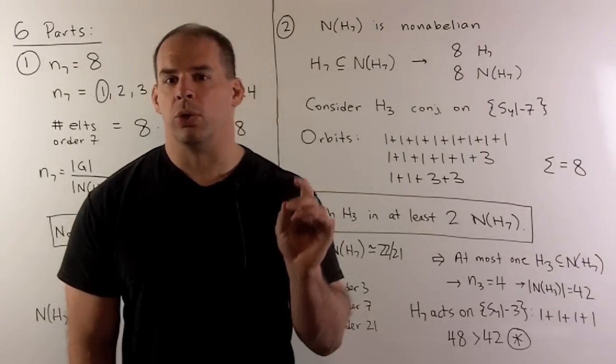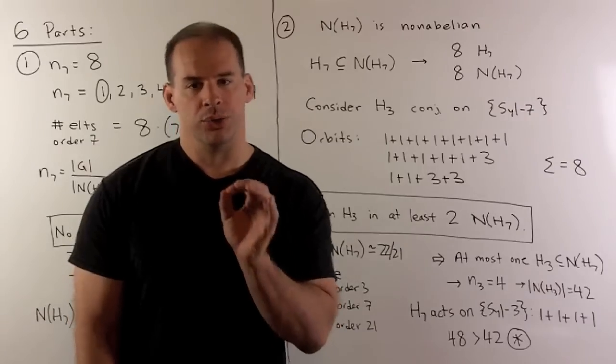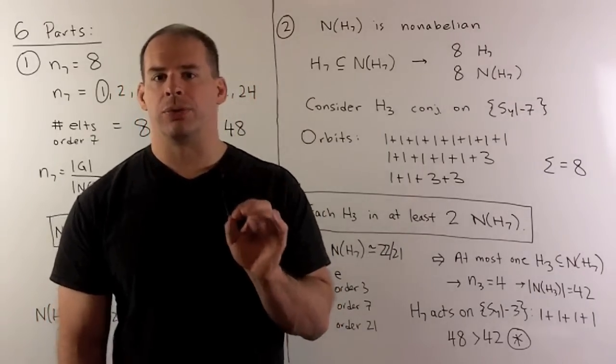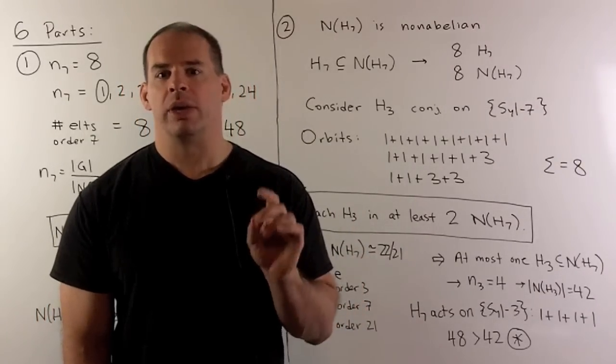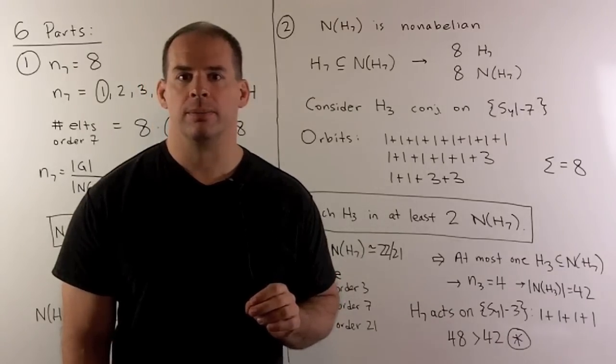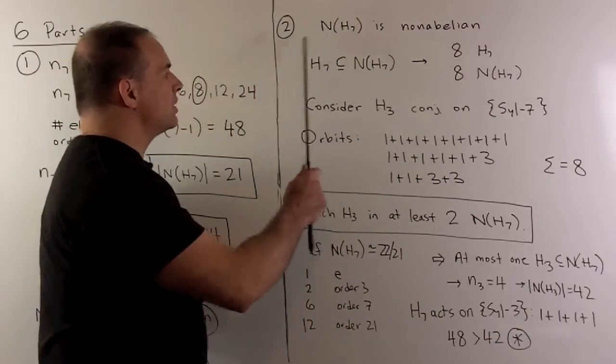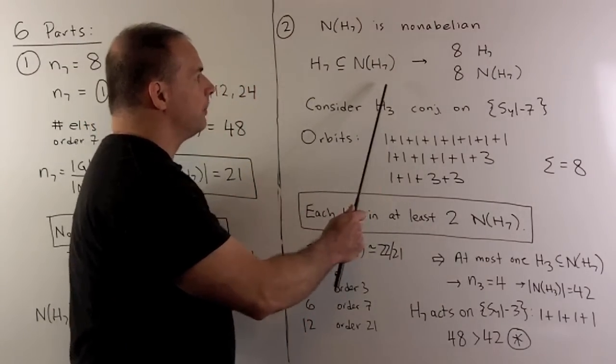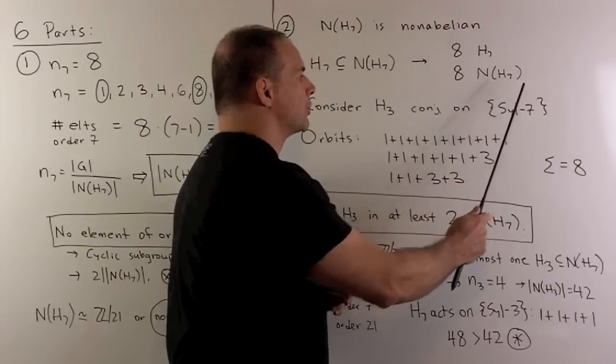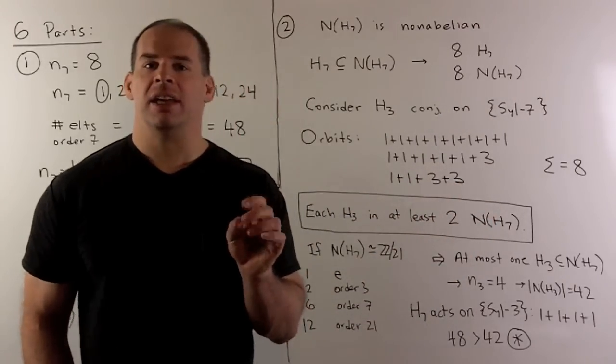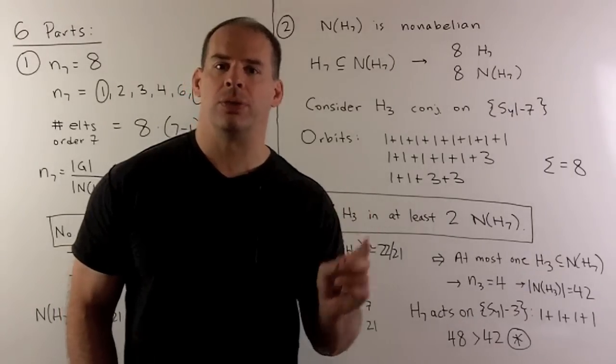Part 2, we show the normalizer of a Sylow 7 is non-abelian. We'll do this by showing that each Sylow 3 is contained in one of our normalizers. Then, we'll count the number of Sylow 3s. We have each Sylow 7 is contained in its normalizer. So, there are going to be eight Sylow 7s and eight normalizers. If we intersect any two of our normalizers, we get either the identity element or a Sylow 3.